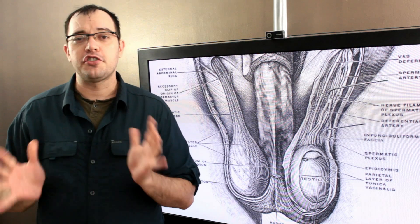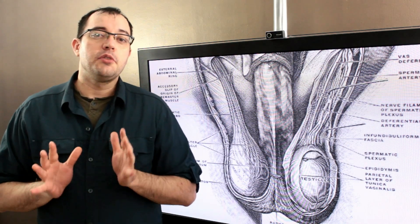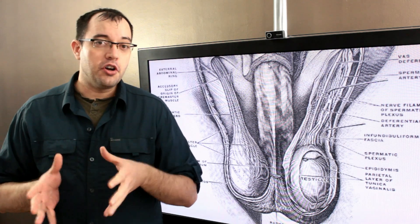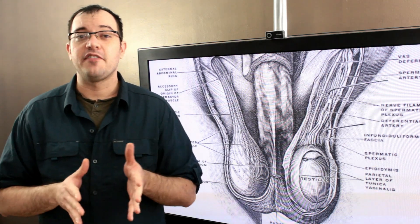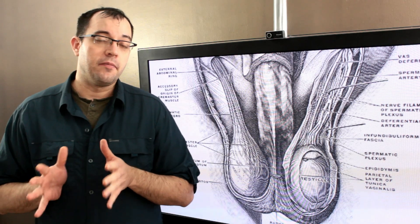For whatever evolutionary reason, sperm start to die when they reach body temperature. So your scrotum exists solely to keep your sperm colder by about 5 degrees than your body temperature.